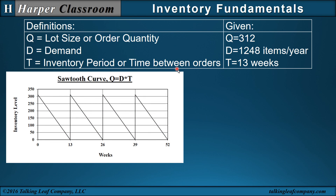Let's represent these concepts in the sawtooth curve. In the sawtooth curve, we have time along the x-axis and inventory levels along the y-axis. At time zero, we receive an order of 312, so our inventory jumps up to 312. Then over time, our demand rate draws down inventory. At zero, we receive another order of 312, and then another order of 312. The time between these orders is 13 weeks, or the inventory period. Notice the Q equals DT equation is represented with this sawtooth curve. One caution: the sawtooth curve merely represents the concept behind the fundamental equation — it does not necessarily represent a true inventory level over time.